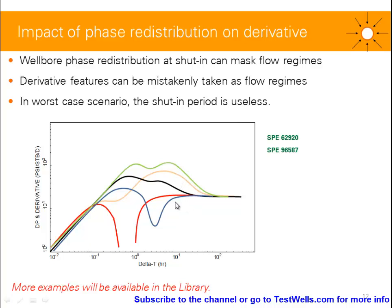In the worst case scenario, the shut-in period is useless. For example, if we've got a PBU less than 100 hours, then we won't be able to use the data, or we could use it but we'll make errors. There are two interesting SPE papers on this which I recommend you to read, and more examples will be available in the library as well.